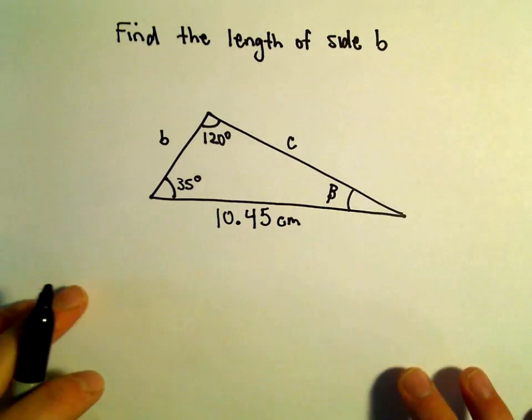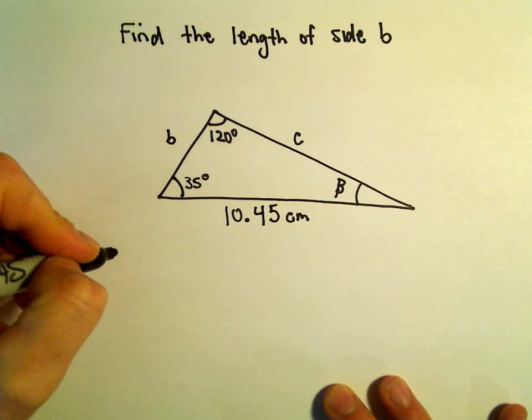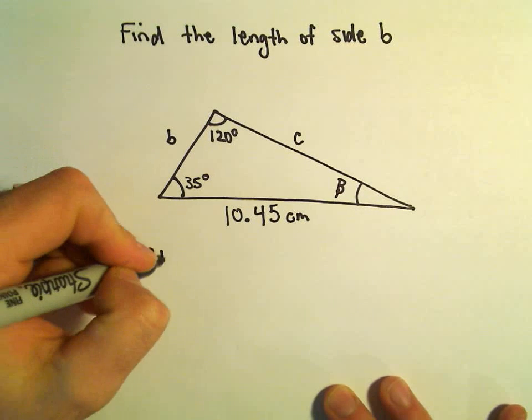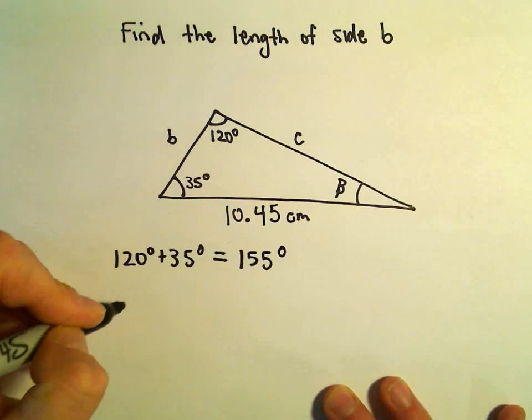Well, kind of the same idea, we know that the angles have to add up to 180, so we've got 120 degrees plus 35 degrees, that would give us 155 degrees.